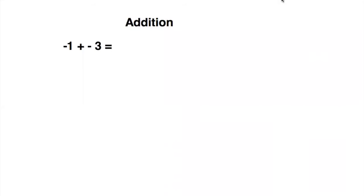So the first part of today's lesson is addition with negative numbers. To add negative numbers, you would just add them as you normally would. So you would do one plus three equals four, and you would put a negative sign in front of it. So the answer would be negative four.